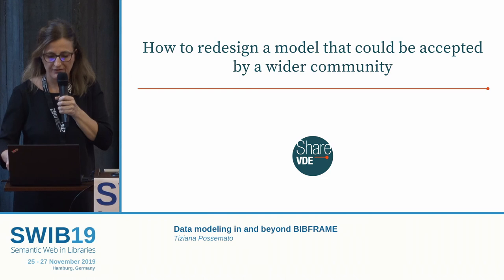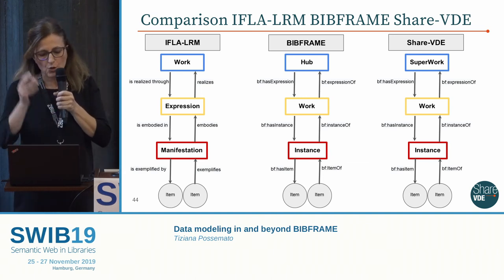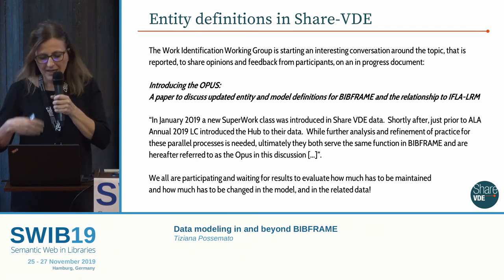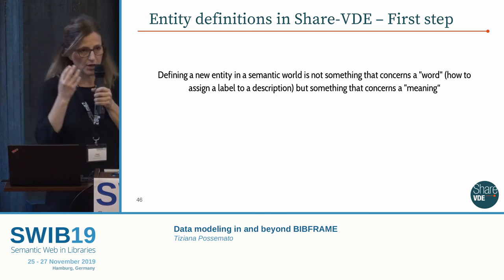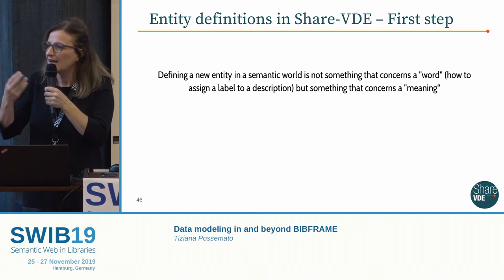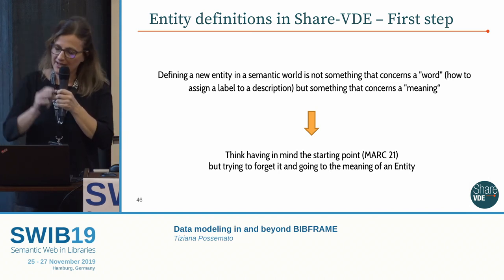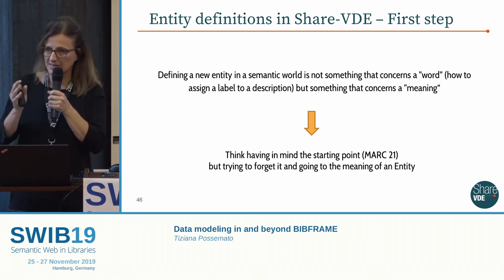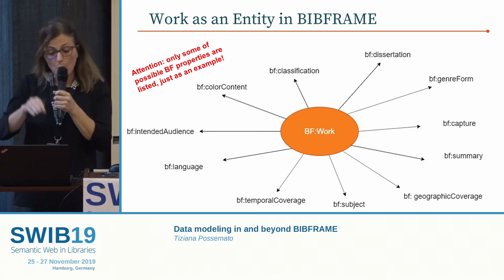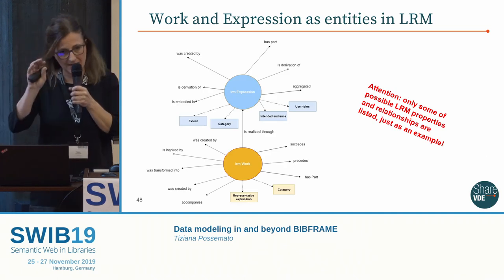This is the future ShareVD model, simplified, which we can start from as a beginning. We can now compare the three models — LRM, BibFrame, and ShareVD — and the reflection continues to give semantic meaning to the concepts of Super Work and Instance. Defining new entities in a semantic world is not about assigning a label to a description but about defining meaning. We start again from the model — BibFrame Work with its properties, and LRM with Work, Expression, and their properties and relationships.